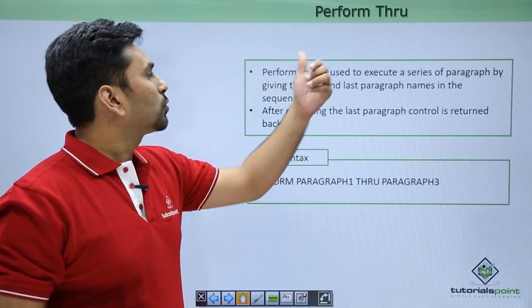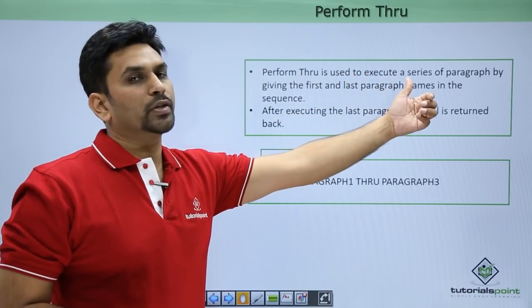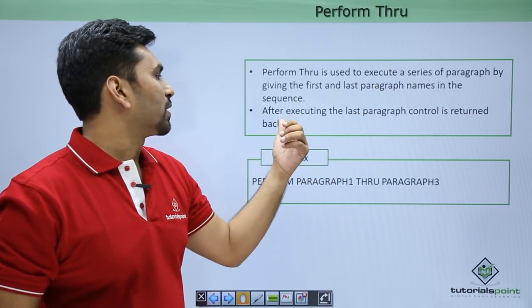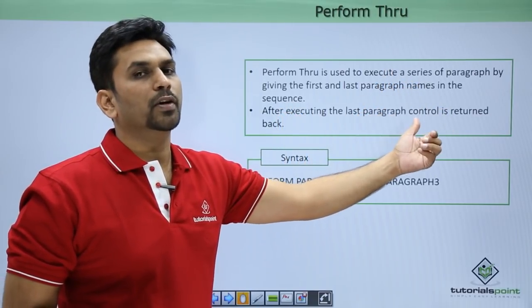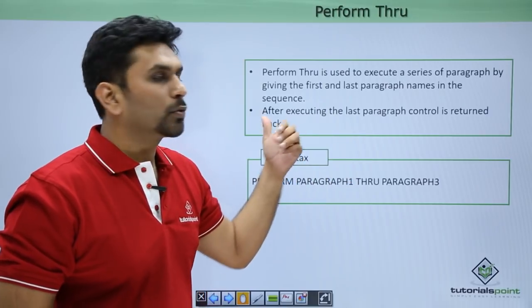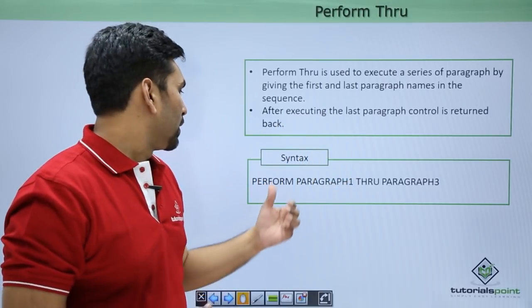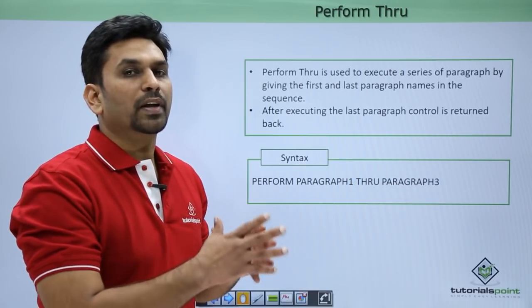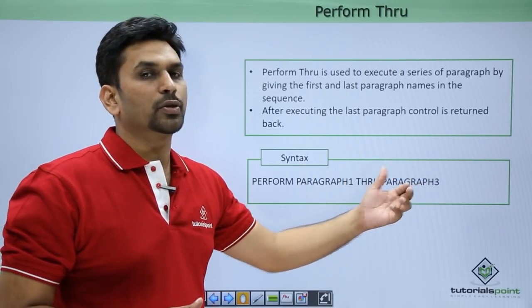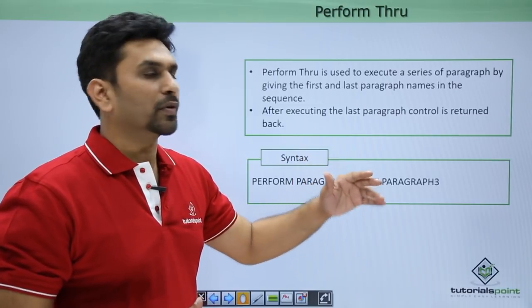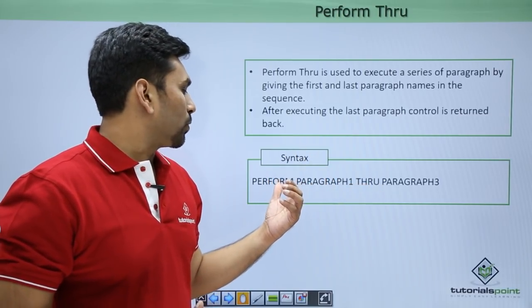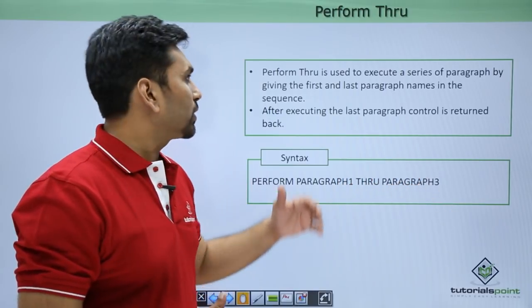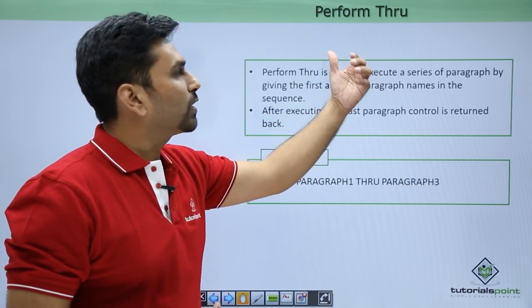PERFORM THROUGH is used to execute a series of paragraphs by giving the first and the last paragraph name in the sequence. After executing the last paragraph, control is returned back to the same paragraph from where it started. The syntax is: PERFORM PARAGRAPH-1 THROUGH PARAGRAPH-3. All paragraphs between 1 and 3 will be executed in the same order in which they were coded — logic flows to paragraph 1, then 2, then paragraph 3.